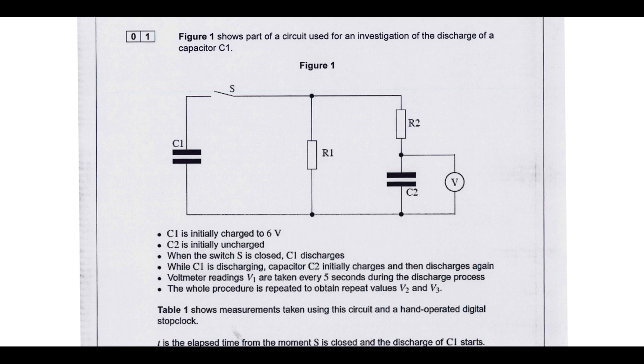Okay, so in terms of what's going to happen, essentially when the switch is closed this one is going to discharge over time. This one will initially charge until it and C1 reach an equilibrium so there's the same potential difference, and then this one will start to discharge once C1 isn't big enough to charge it anymore.